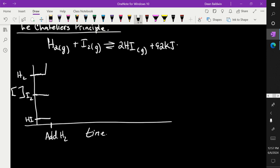H2 spikes up and then goes back down. Does it ever go to the original? No. So then it comes back down and it reaches equilibrium again.